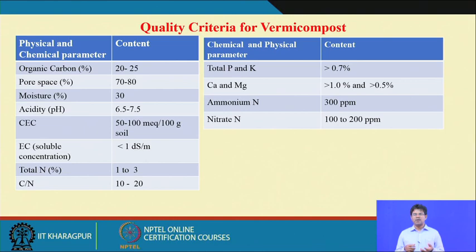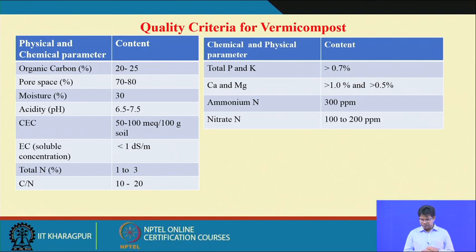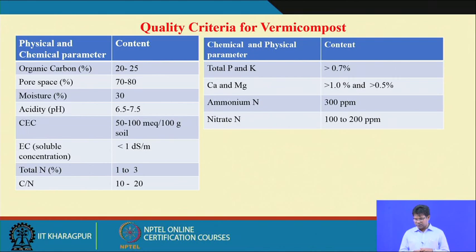Biomass increase is regulated by macro nutrients like nitrogen, phosphorus, and potash, while quality is regulated by micronutrients. Nitrogen should be 1–5% — not less than 1%. C:N ratio should be 10–20:1. Total phosphorus and potash should be higher than 0.7%. Calcium should be higher than 1%, magnesium higher than 0.5%. Ammonium nitrogen should be more than 300 ppm and nitrate nitrogen around 100 ppm. These are the quality parameters for normal vermicompost.